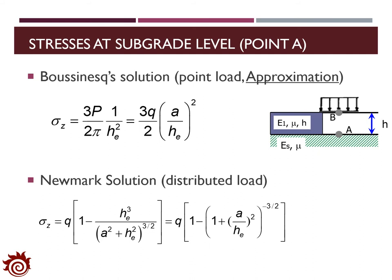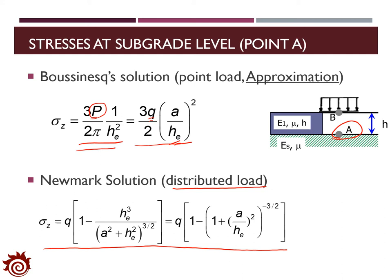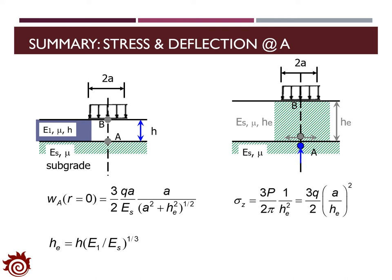The Boussinesq solution also provides the estimation about the stress applied at point A. The stress at point A can be estimated by the equation here, where P is the load applied to the surface of the first layer. We can also estimate the vertical stress based on the contact pressure and the equivalent thickness. In addition, we can introduce the Newmark solution to estimate the stress with distributed load, and the equation below shows the estimation of the vertical stress from this method.